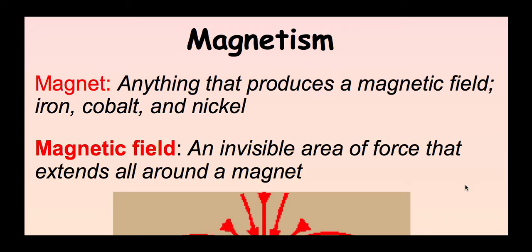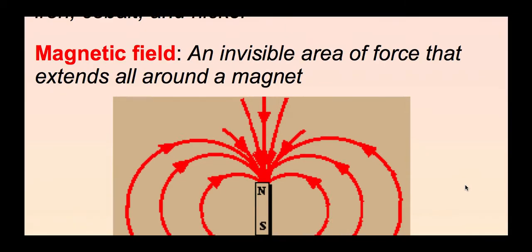So a magnet is anything that produces a magnetic field, and there are actually only three types of metals that can become magnets: iron, cobalt, and nickel. A magnetic field is an invisible area of force that extends all around a magnet. So it's just the area around a magnet, that's what a magnetic field is.